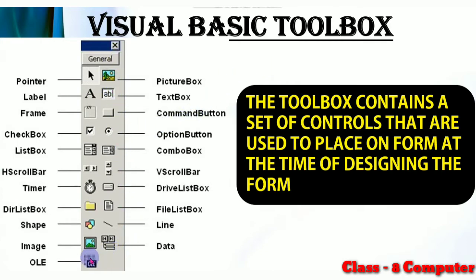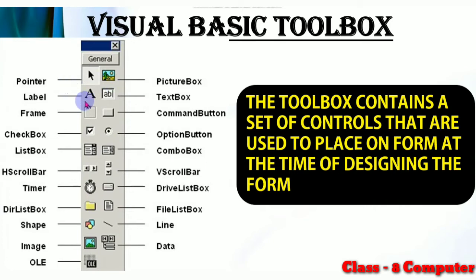As you can see, the picture of a toolbox is present here. The toolbox in Visual Basic basically contains a set of controls that are used to place on a form at the time of designing. When we start designing the form, we need several controls to execute our program, and those controls are provided through the toolbox. Controls include the picture box, pointer, label, text box, command button, option buttons, combo box, and many more.